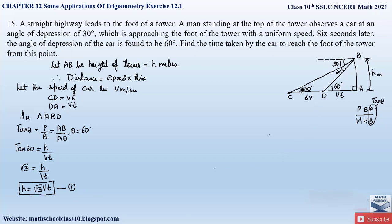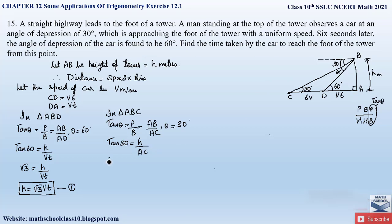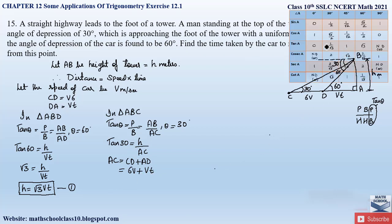Now let us consider triangle ABC. Applying tan θ: tan 30° = AB / AC, where the angle is 30 degrees. AC = CD + AD = 6v + vT. From the trigonometric table, tan 30° = 1/√3. So 1/√3 = h / (6v + vT).